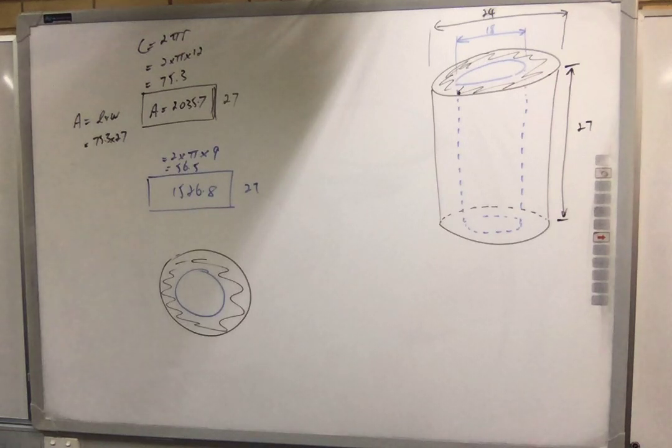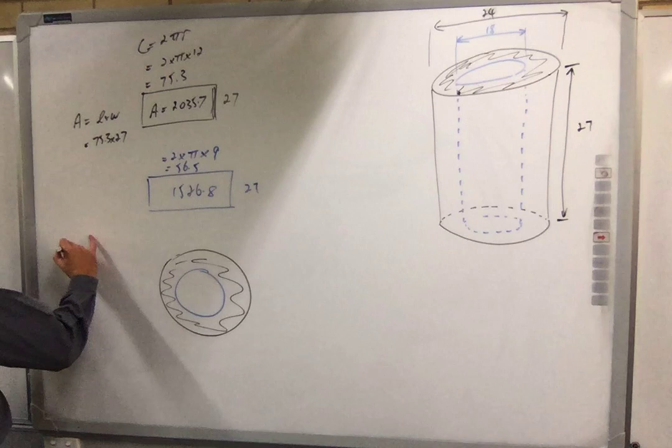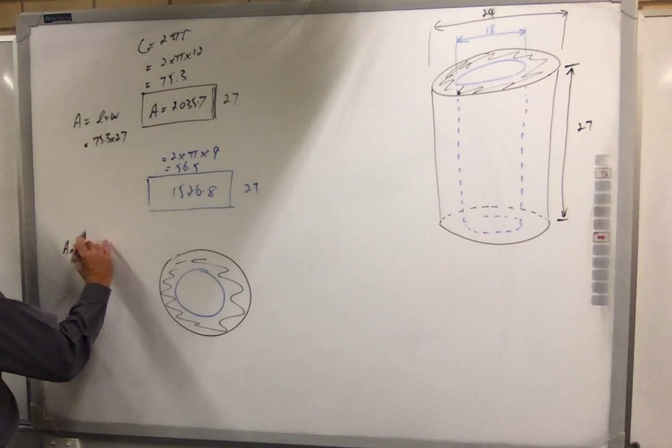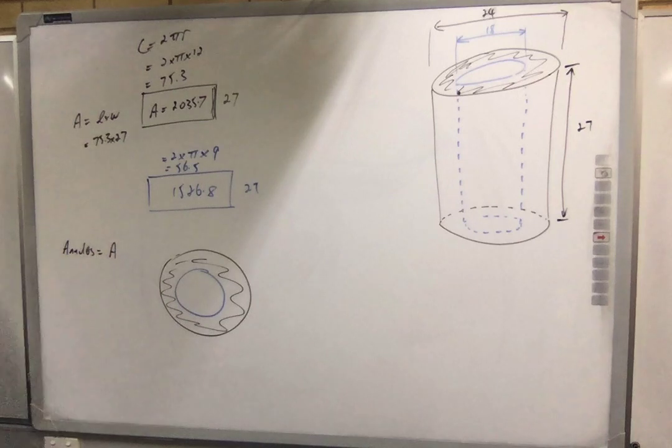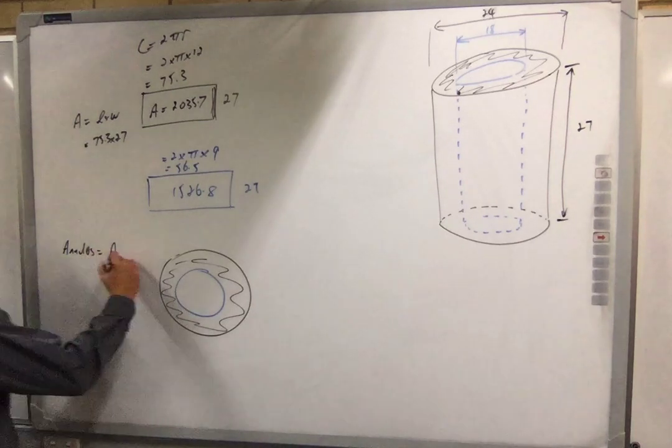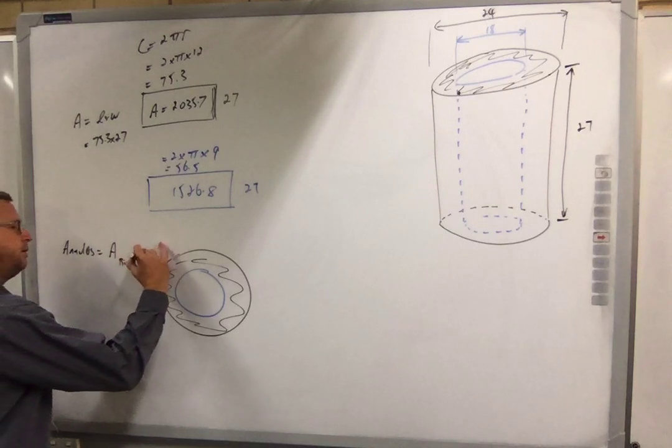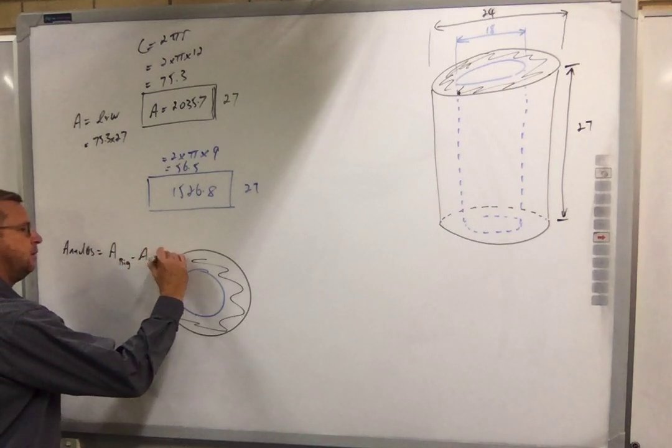Technical terms, anybody? Annulus. Thank you Sam. Lucky you turned up today. Annulus, how do you find that? So there's a big circle and a little circle. So it's the area of the big minus the area of the small.